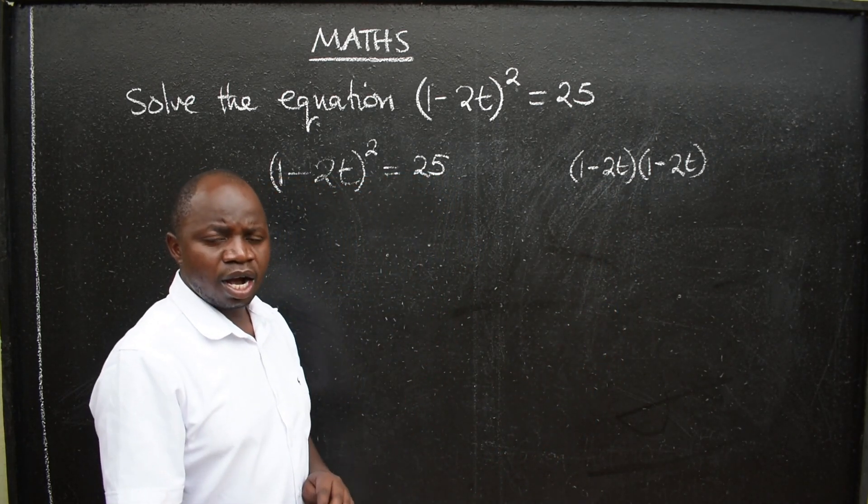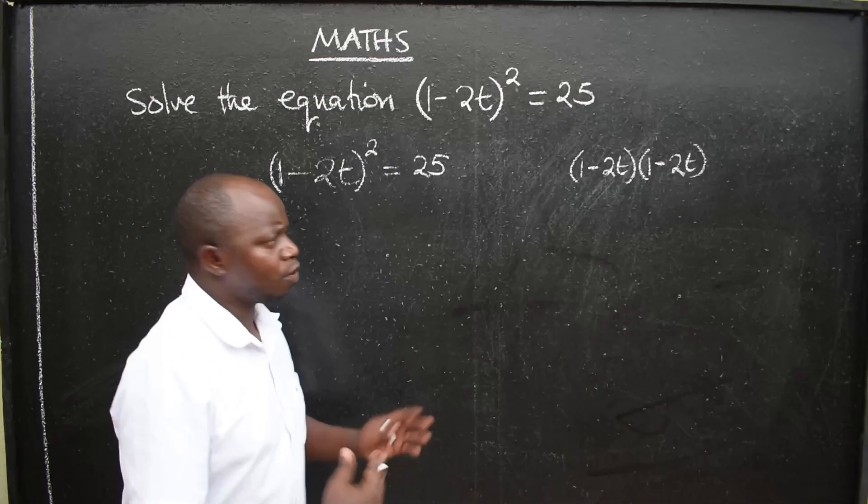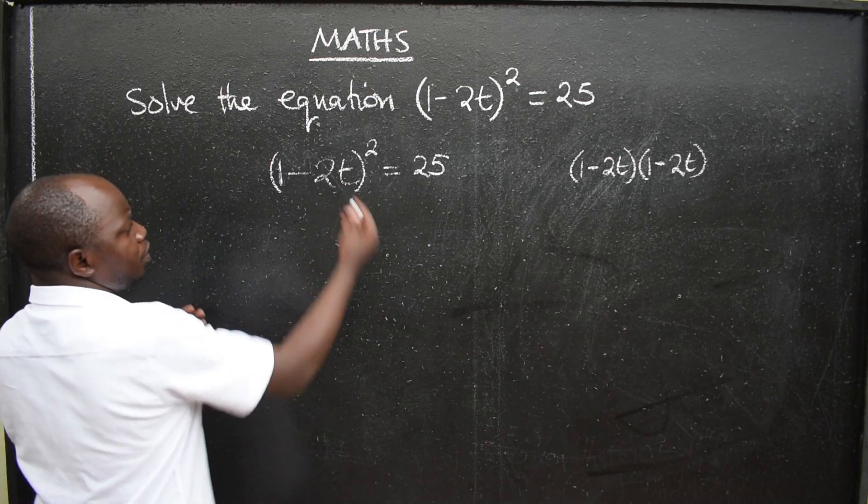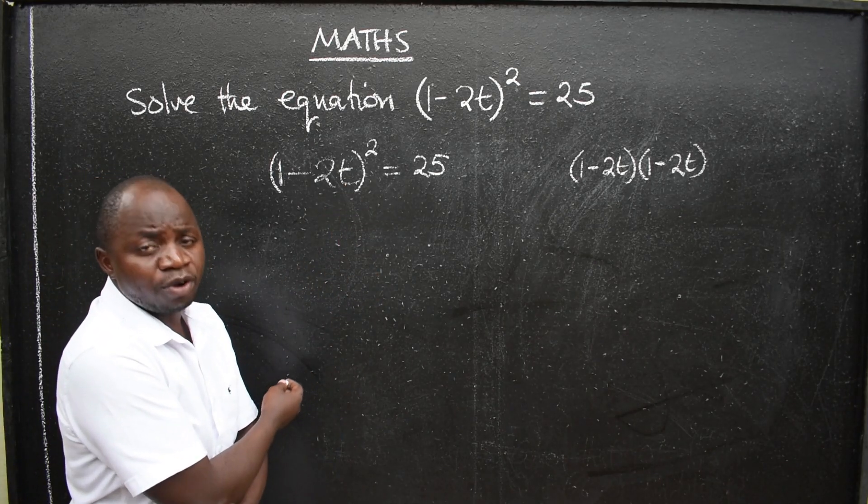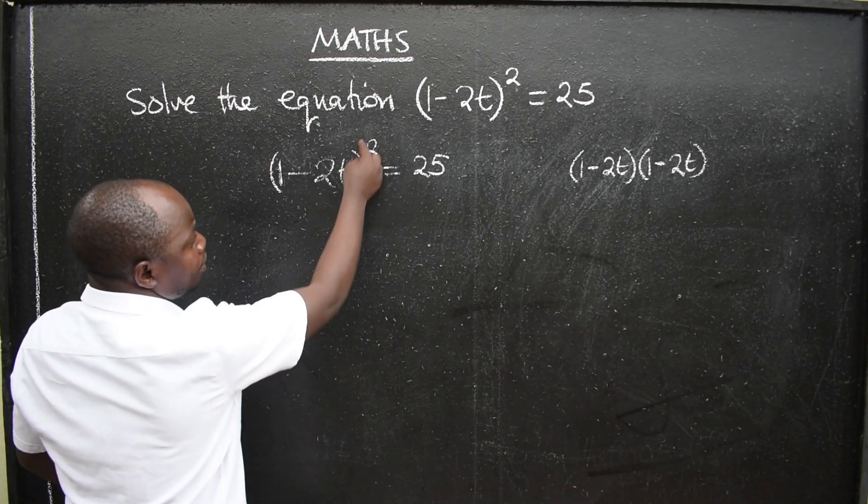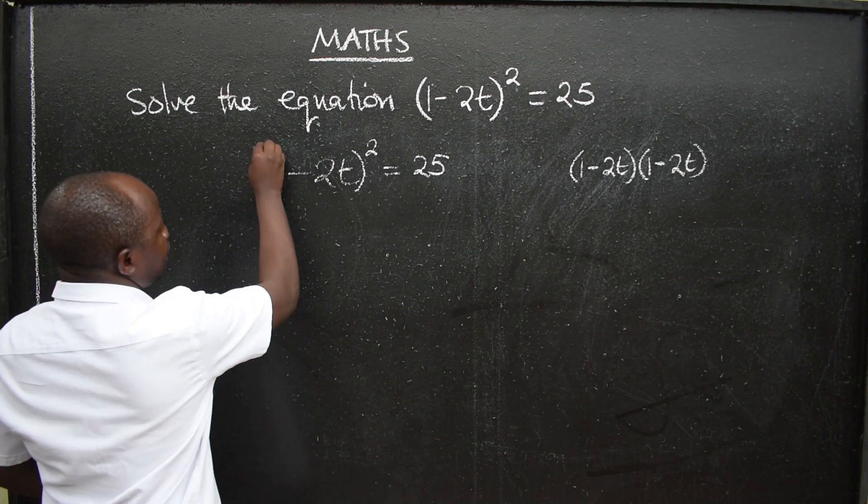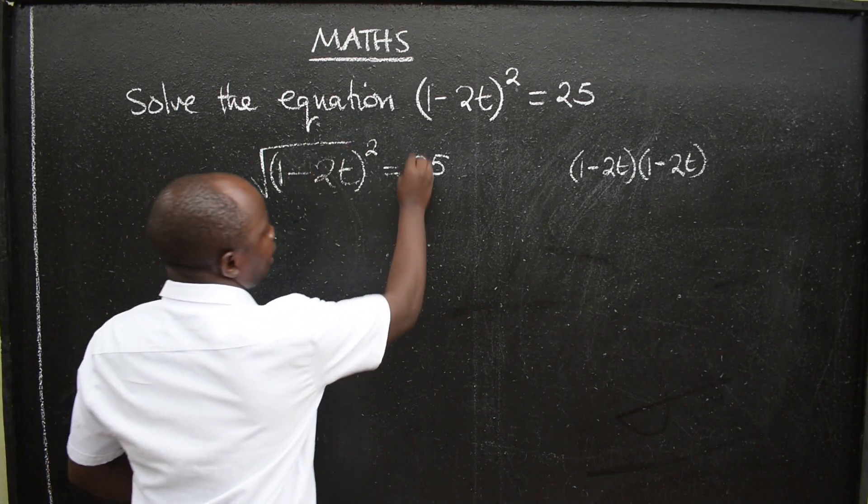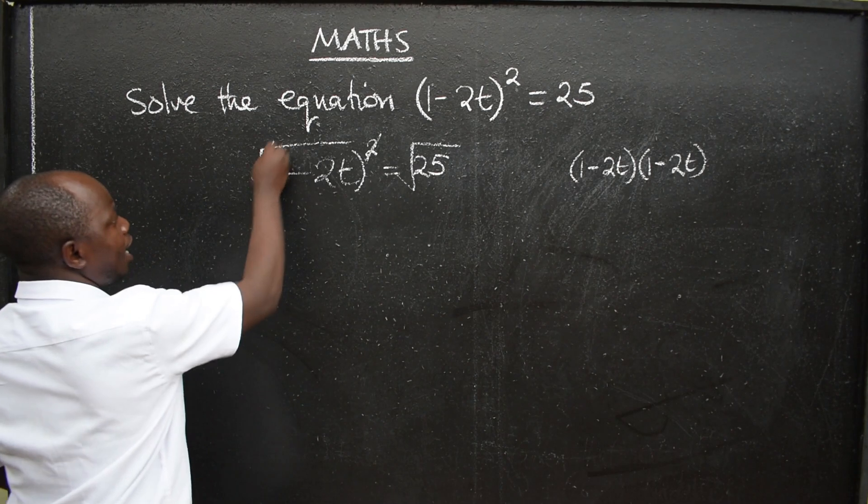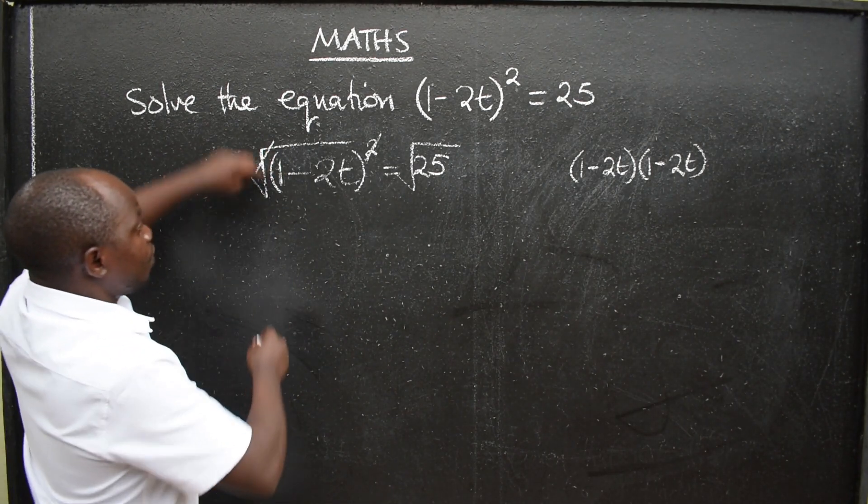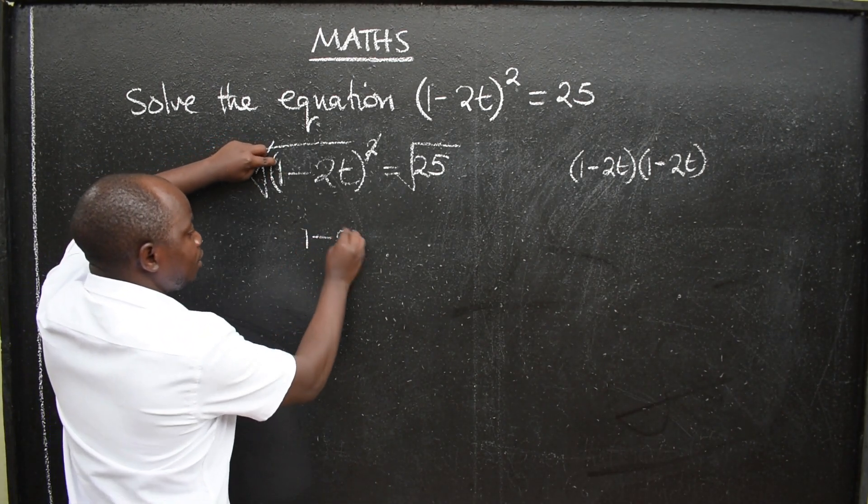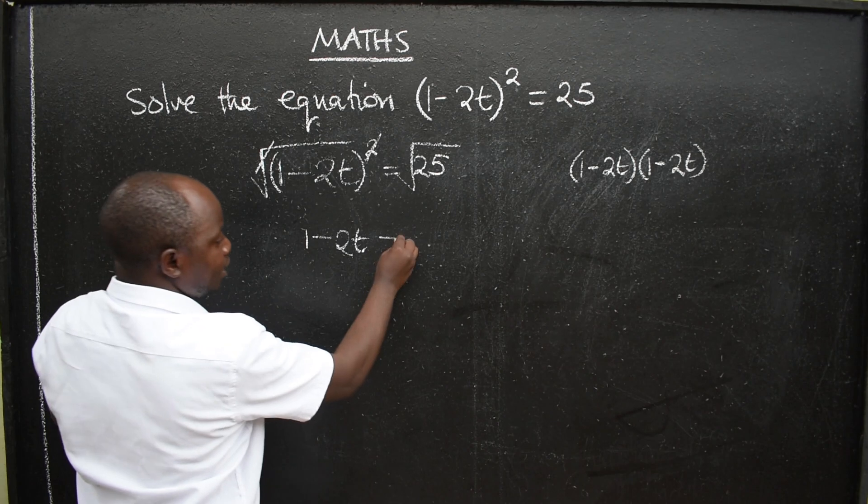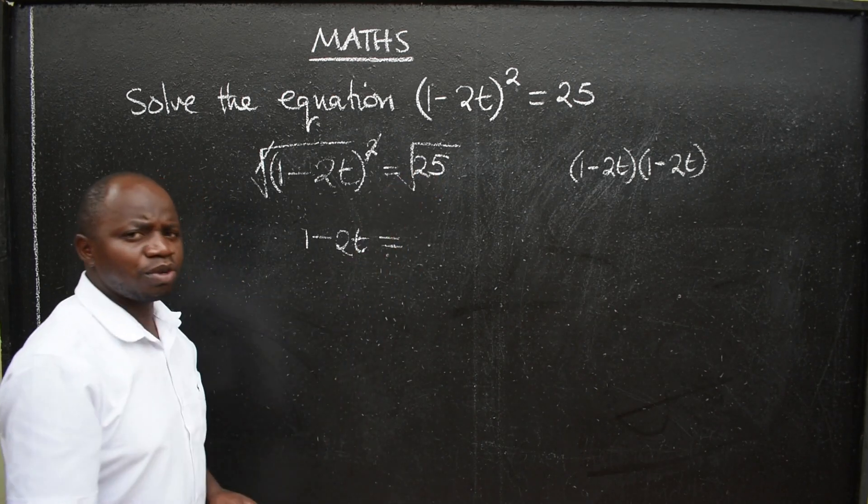You don't have to go that way. What you can do is introduce square roots on both sides so that you get rid of this square. I'll say square root, even the other side, square root. This square and that will cancel. We're going to remain with 1-2t is equal to what is the square root of 25?